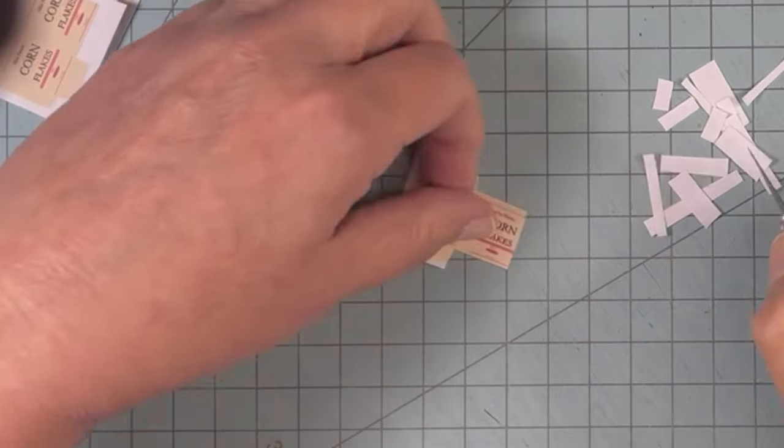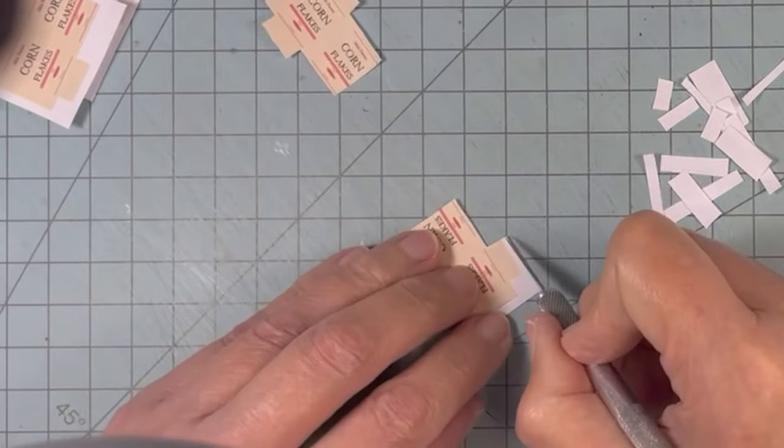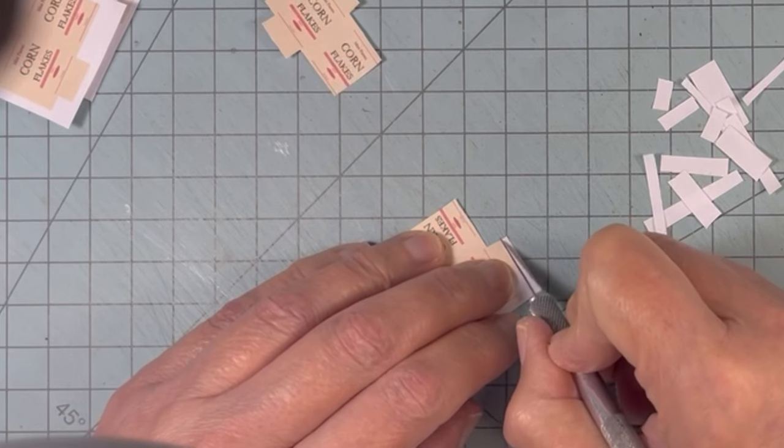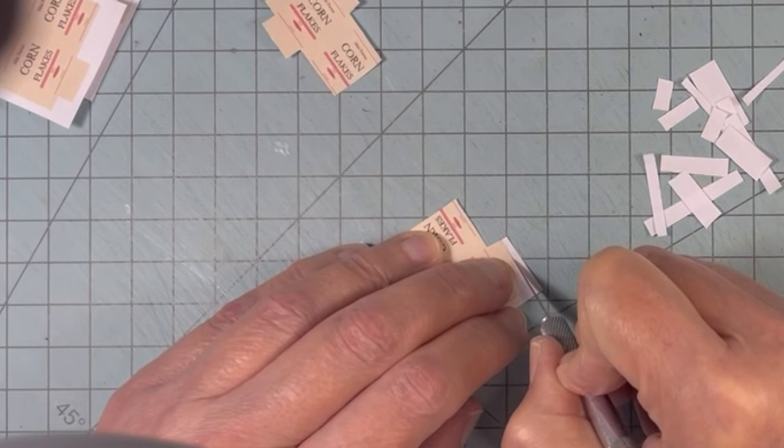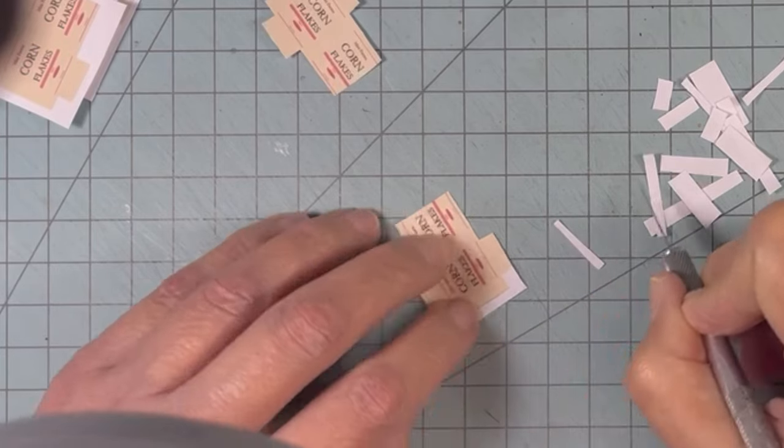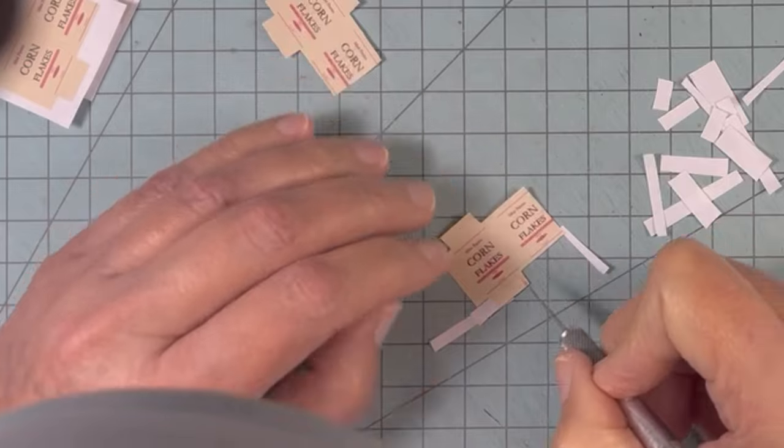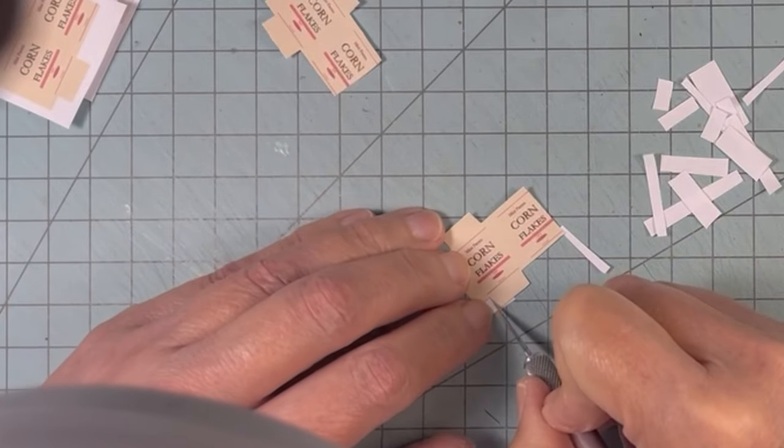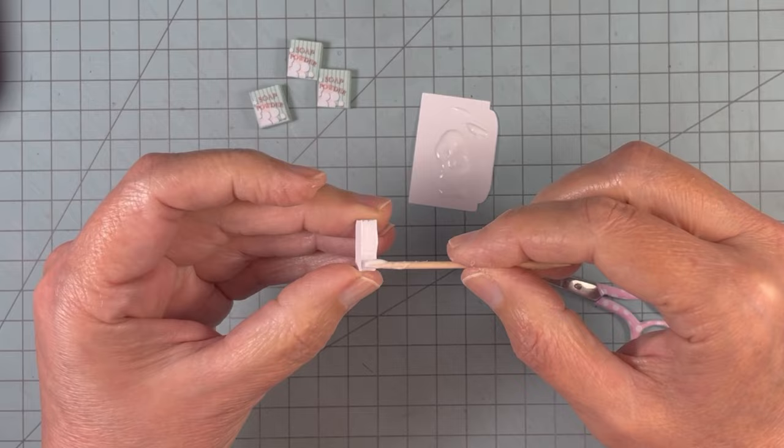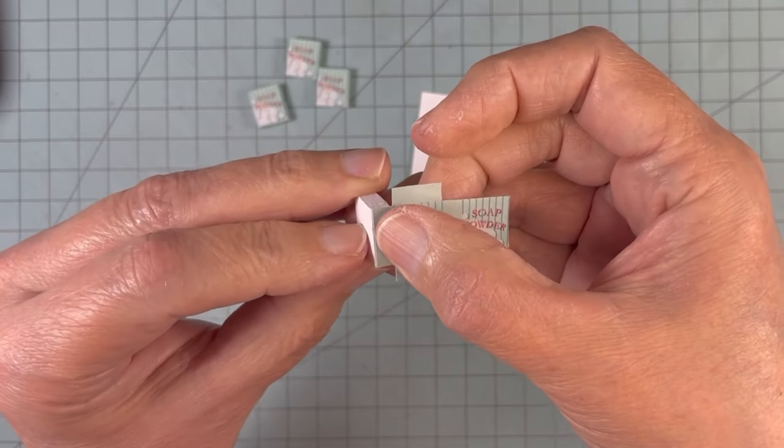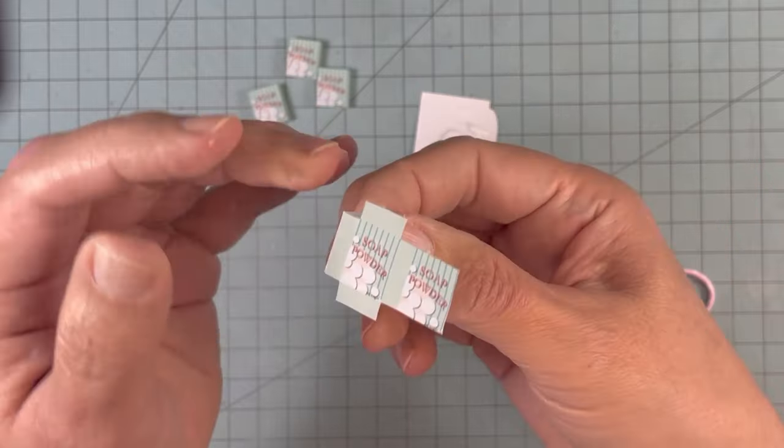This is how I made my little boxes. I made my designs first and then I cut them out. The foam board turned out to be the perfect width of a box in the scale that I'm working in.